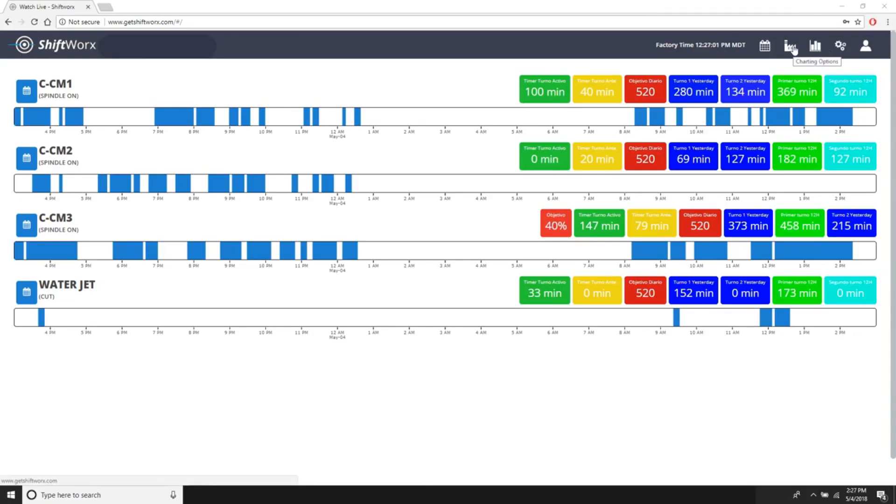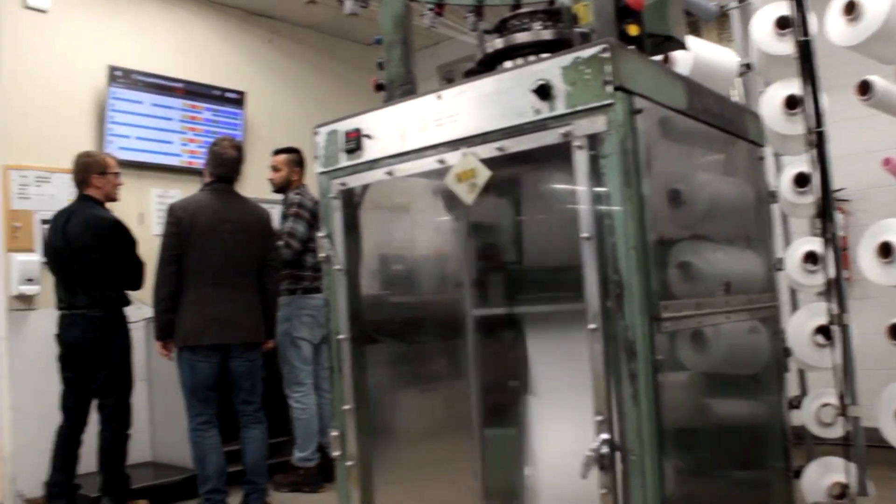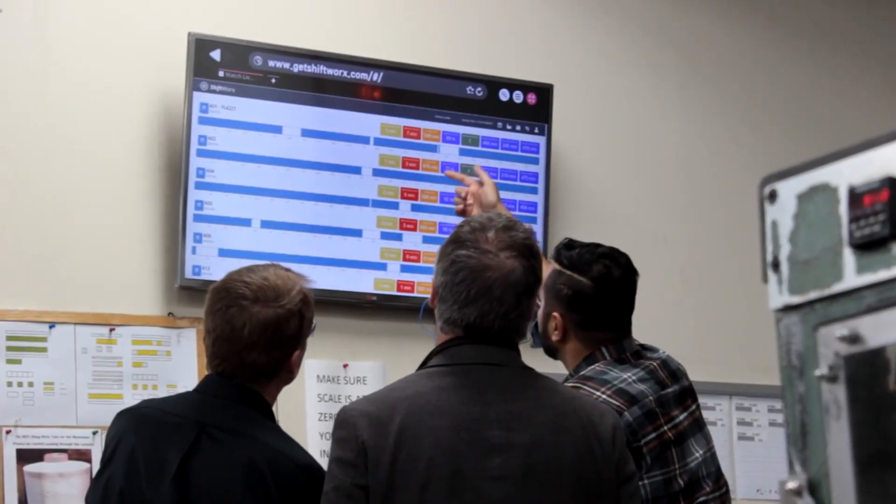WatchLive is a tool that is used for reporting data. It displays a set of machines and their states as active or inactive on the timeline. Typically, this window is displayed on monitors around the manufacturing plant.